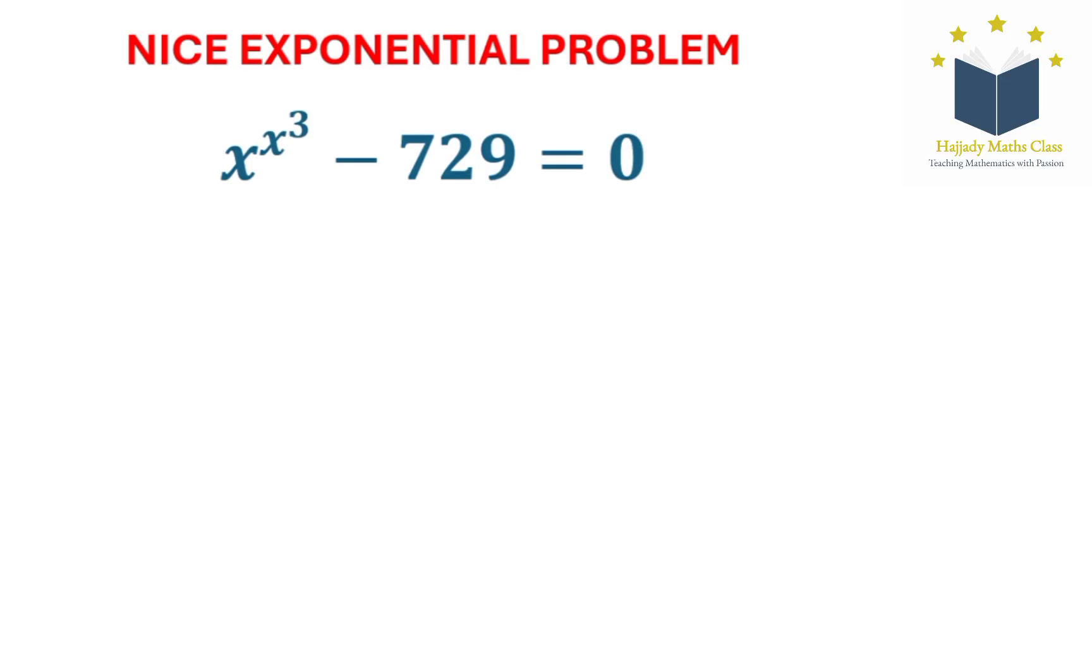Hello viewers. Now I'll be solving this nice exponential problem by rewriting the given equation. I'm going to have x to the power of x to the power of 3 equals 729.